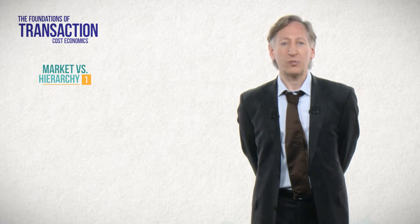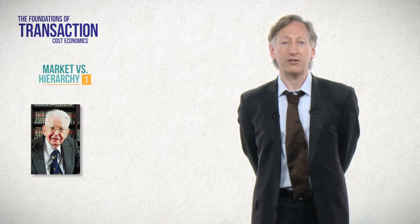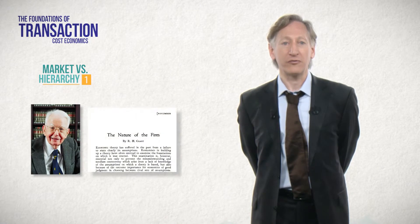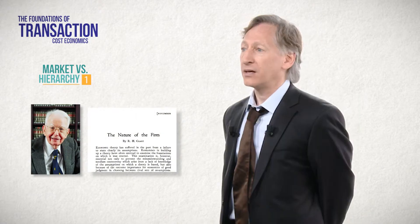Let's turn the clock back to 1937. In that year, Ronald Coase published his famous article, The Nature of the Firm. In this article, Coase asked a profound question in two parts. First, if markets are so effective at allocating resources for production, then why do firms even exist?